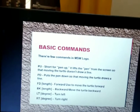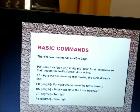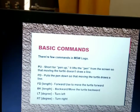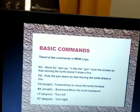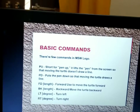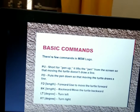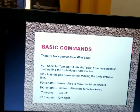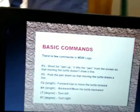FD is the Forward command — it is used to move the turtle forward. BK is the Backward command — it is used to move the turtle backward. LT is the Turn Left command — using this command the turtle will move toward the left direction. RT is the Right Turn command — using this command the turtle will move to the right direction.